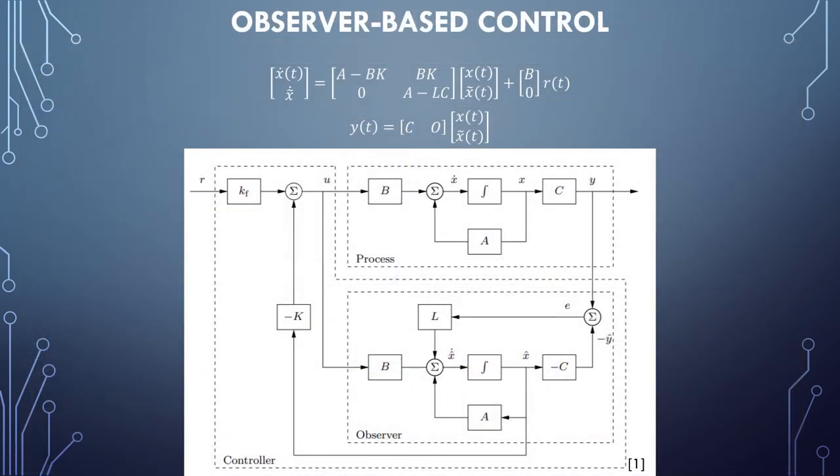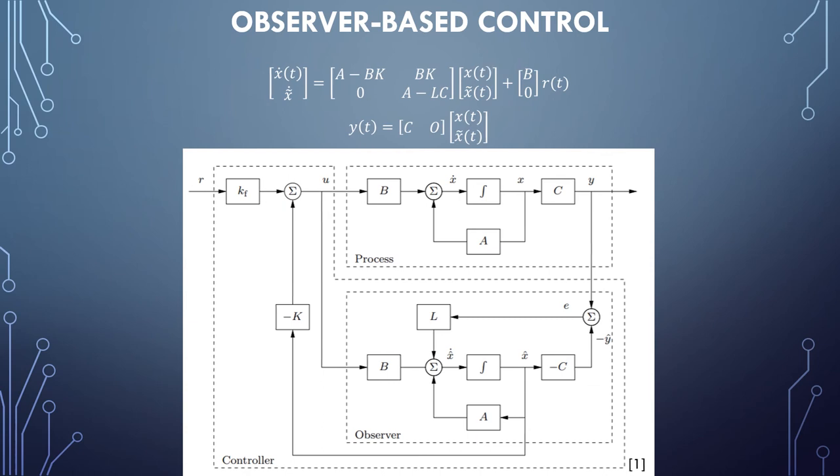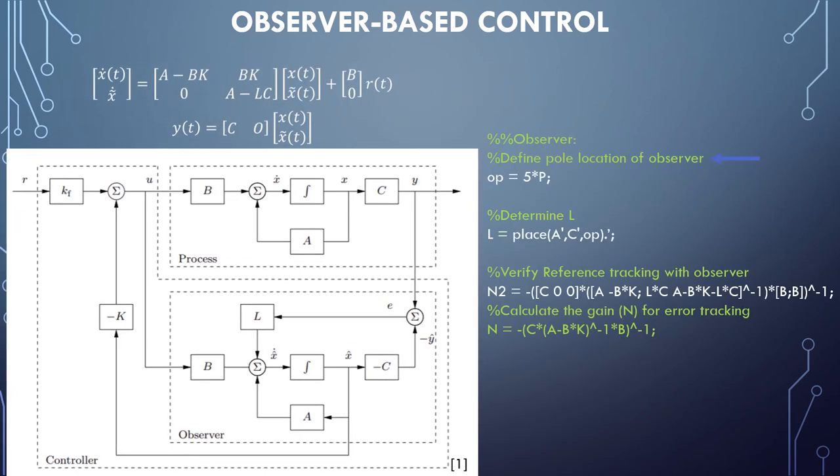Now that we have an optimized controller, let's make the assumption that the states of the system cannot be directly observed. What we can do is to create an observer or estimator to estimate the states so that we can implement our feedback gain. The dynamics of this new structure are displayed at the top of the screen. The only new matrix that is needed is the estimator gain L matrix. The concept of superposition allows us to design the location of the poles for the controller and the estimator separately and then combine them into the same system. We have our controller, so all that is needed is to determine where to put the poles of the estimator.